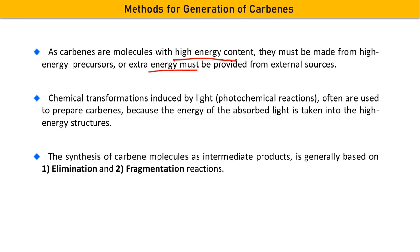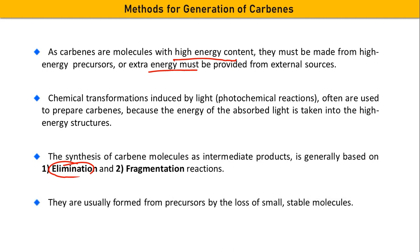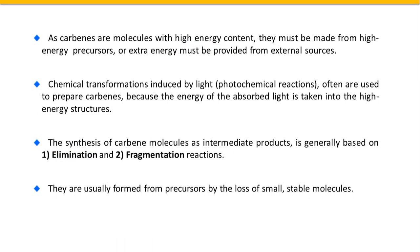All reactions used for generation of carbene can be classified under two broad categories: elimination reactions and fragmentation reactions. For elimination, we will discuss two main reactions today; fragmentation will be discussed in another video. It is mostly seen that carbenes are formed from a precursor by the loss of some small, stable molecule.